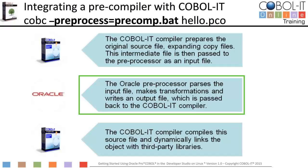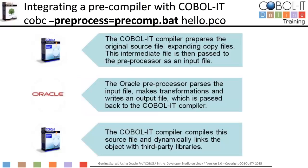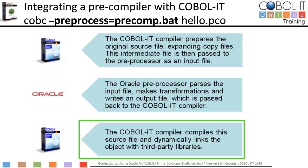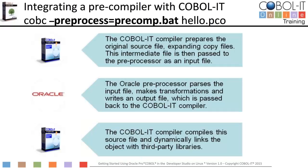The Oracle pre-processor parses the input file, makes transformations, and writes an output file which is passed back to the COBOL IT compiler. Finally, the COBOL IT compiler compiles this source file and dynamically links the object with third-party libraries. Let's proceed now to more specifics, which you'll need to understand in order to use Oracle Pro COBOL in the Developer Studio on Windows. We need to make changes in the compiler configuration file.